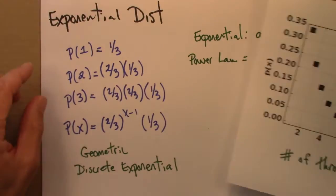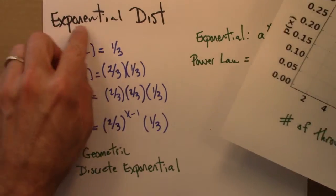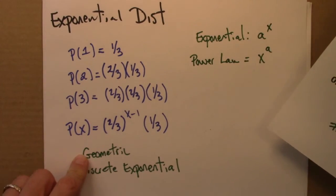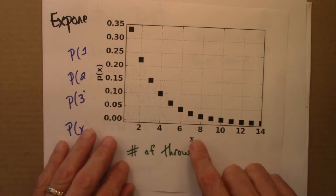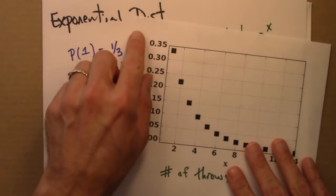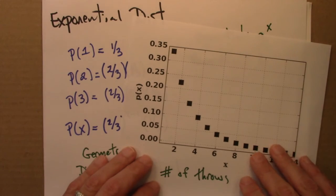So in any event, this is an exponential or geometric distribution. And this is a general shape that we have. So let me say a little bit more about some of the general properties of the exponential distribution before wrapping up.